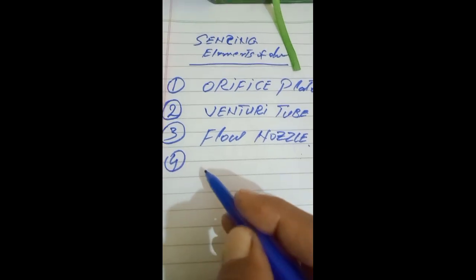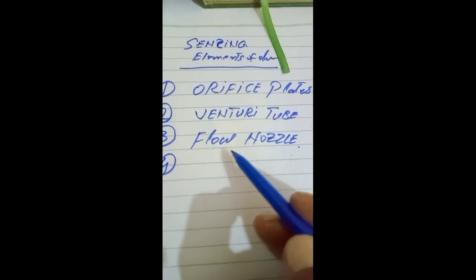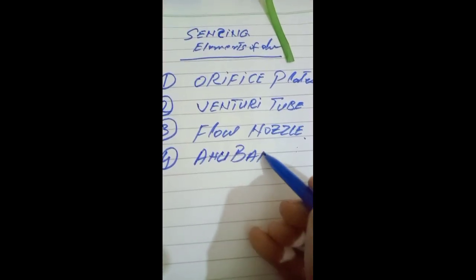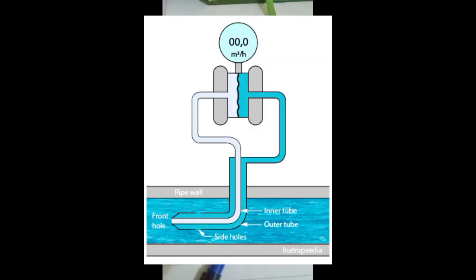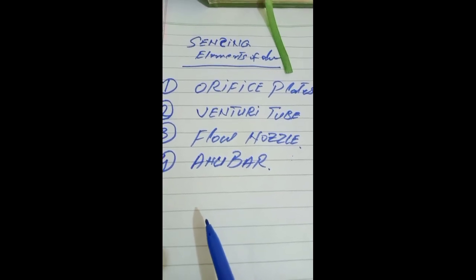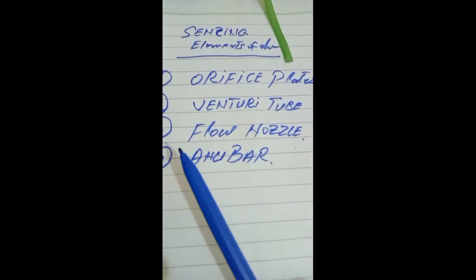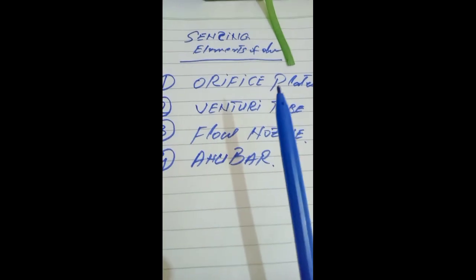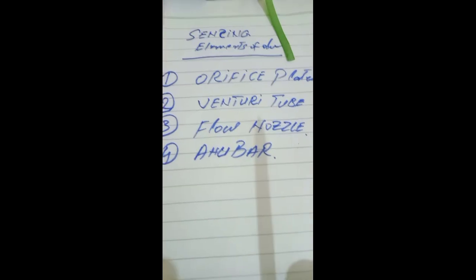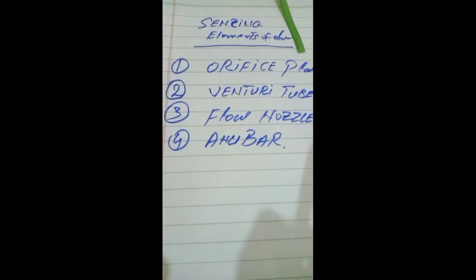Number four is the annubar. We have already covered orifice plate, venturi tube, and flow nozzle. What is the annubar? An annubar is a dual chamber tube with multiple sensing parts on both chambers. In the future we will explain each flow device briefly. Today our session covers only what the flow elements are and a simple introduction of these elements.